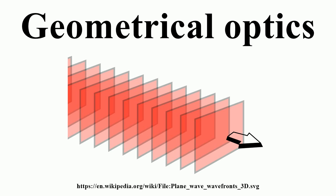With such surfaces, the direction of the reflected ray is determined by the angle the incident ray makes with the surface normal, a line perpendicular to the surface at the point where the ray hits.